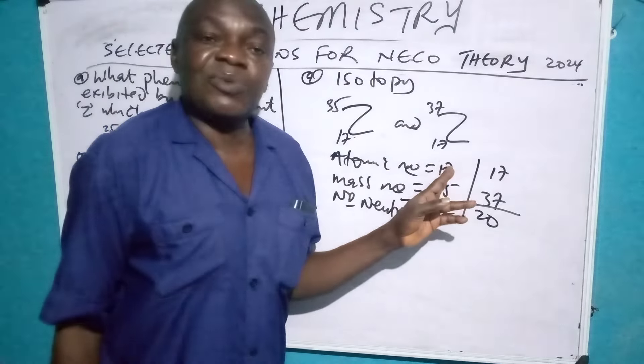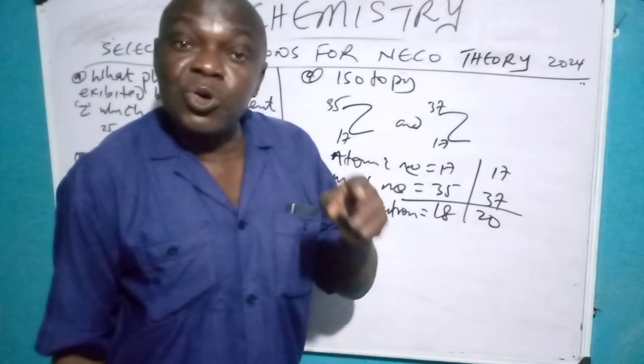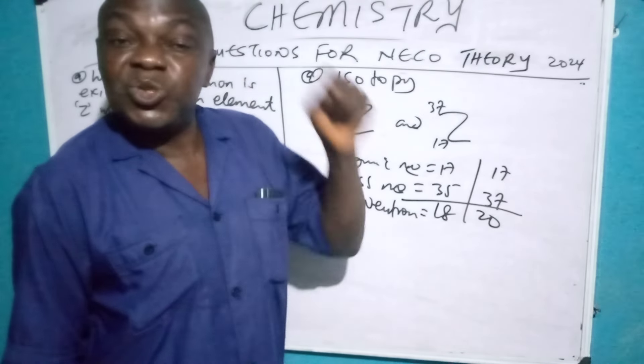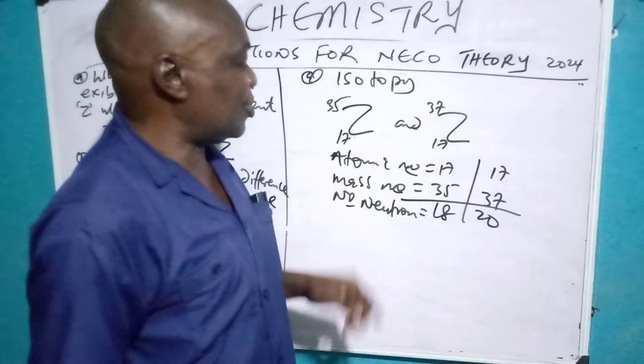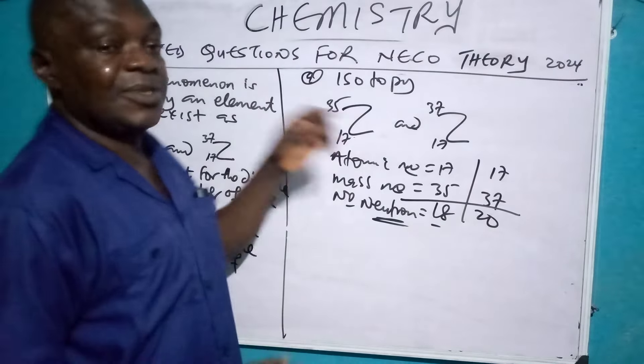So, isotopes are atoms of the same element, the same atomic number, the different mass number, due to the different number of neutrons. So, this different number of neutrons is what brought about isotopes.